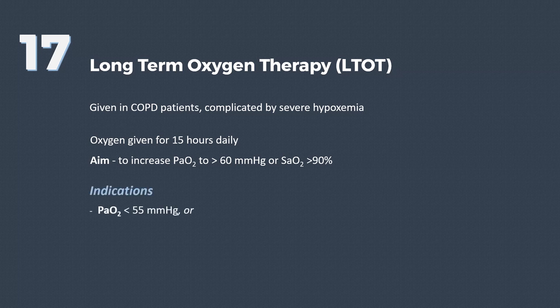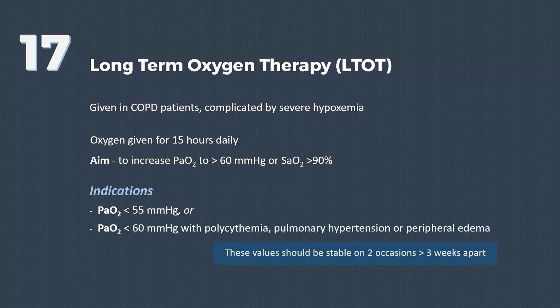Criteria for domiciliary oxygen include arterial partial pressure of oxygen less than 55 mmHg, or when the patient's arterial oxygen is less than 60 mmHg along with polycythemia, pulmonary hypertension, or peripheral edema.